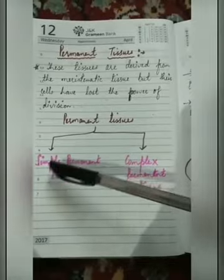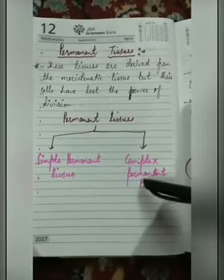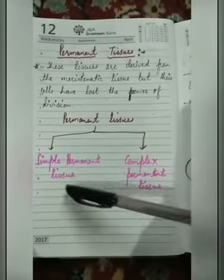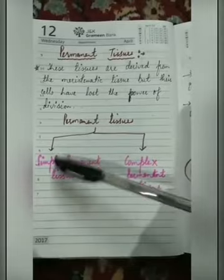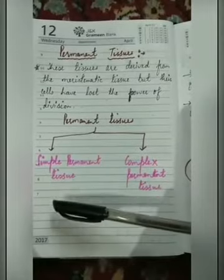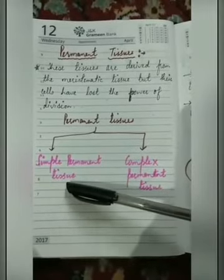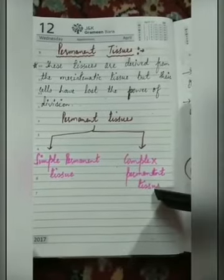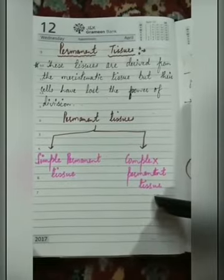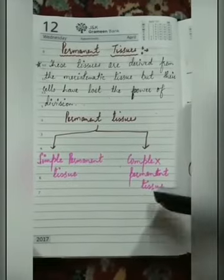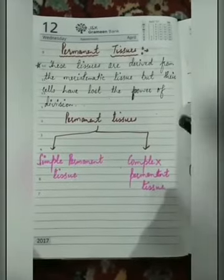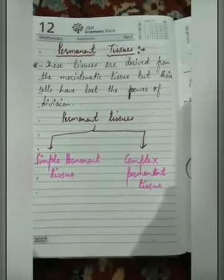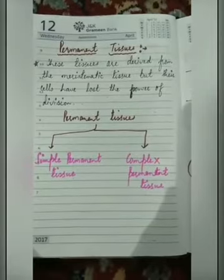Permanent tissue is of two types: simple permanent tissue and complex permanent tissue. Simple permanent tissue, as the name depicts, is made up of only one type of cell. Complex permanent tissue is made up of more than one type of cell, which adds to the complexity of the tissue.